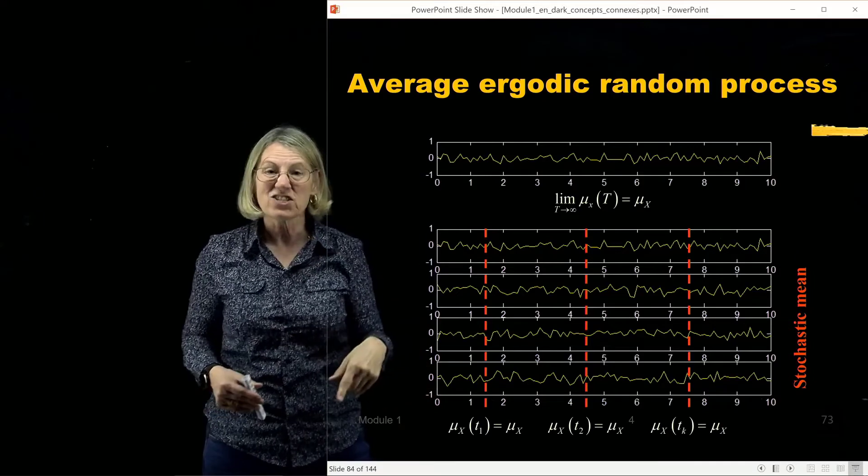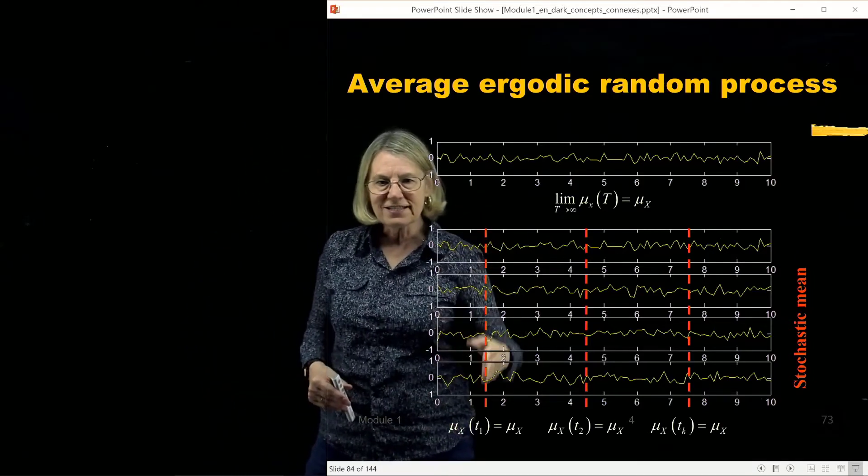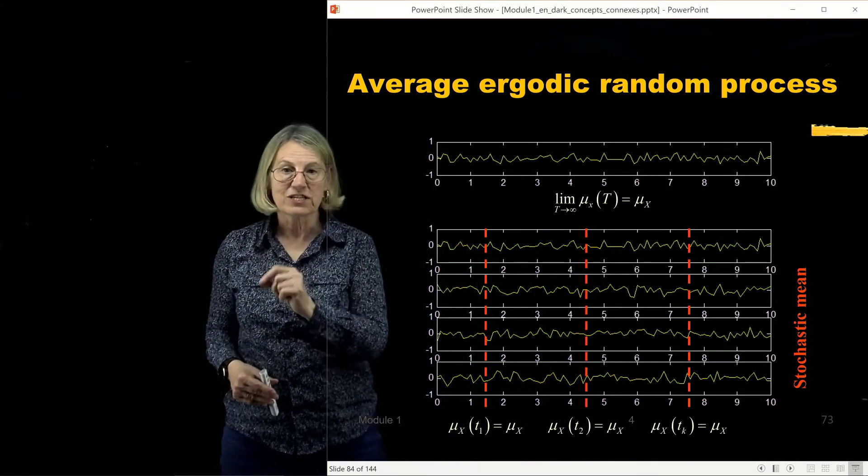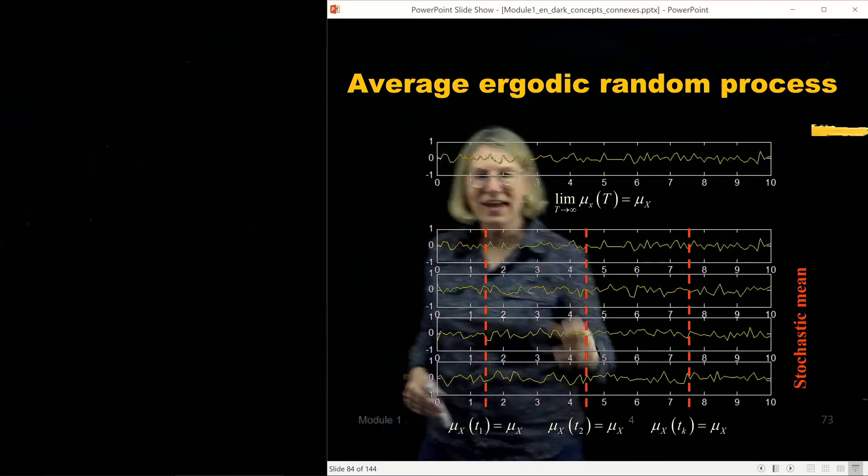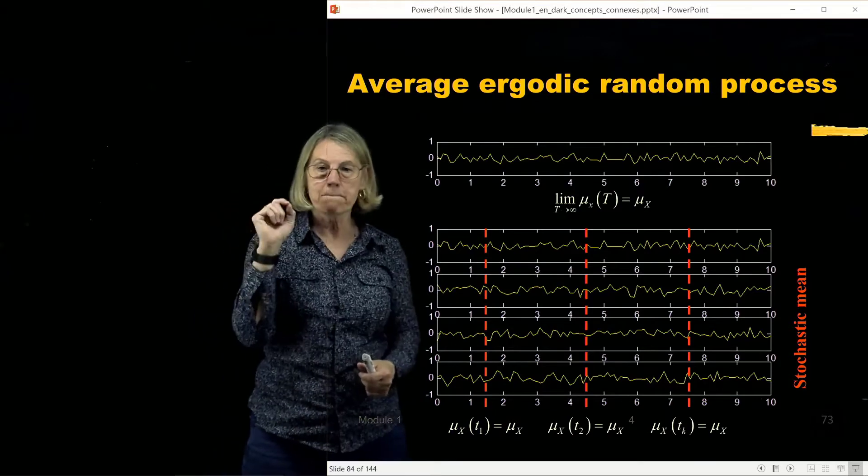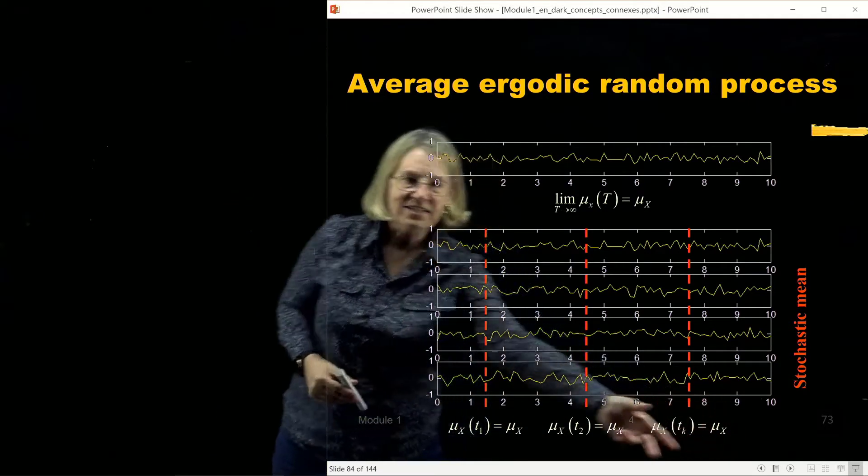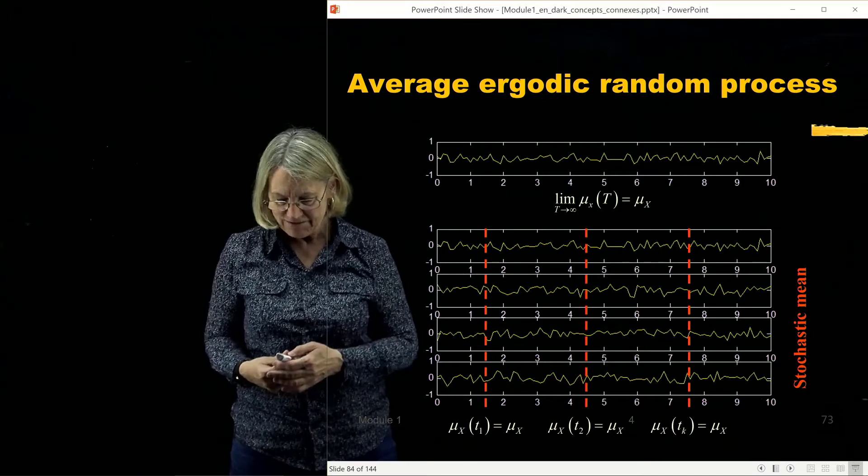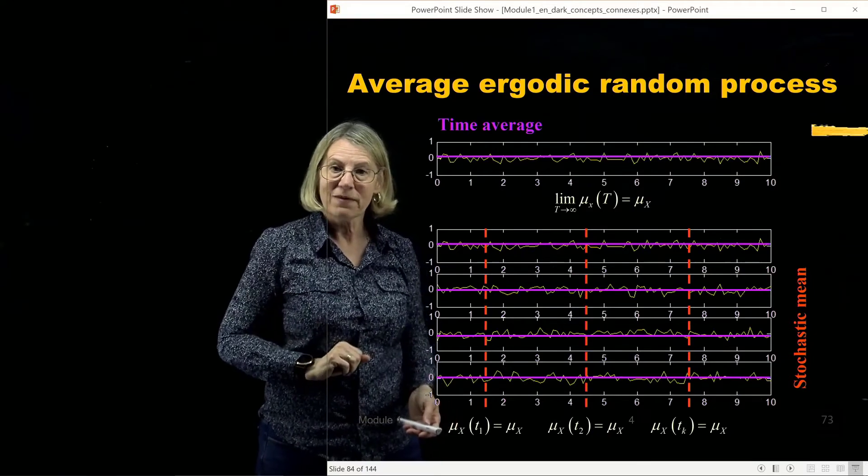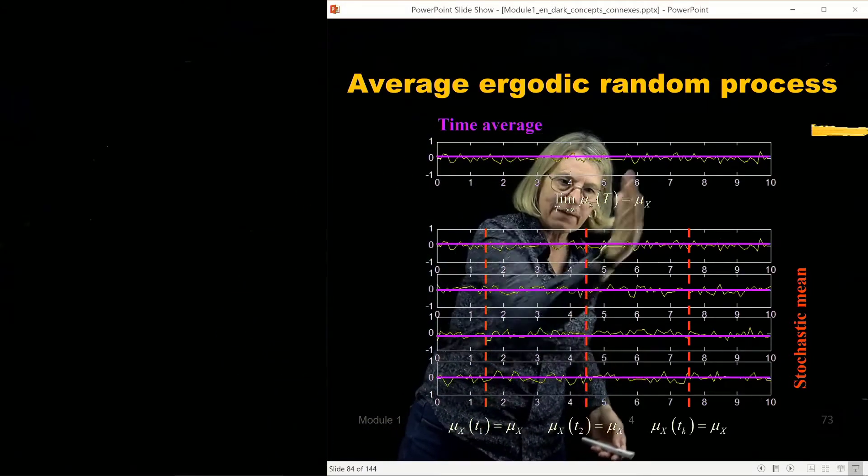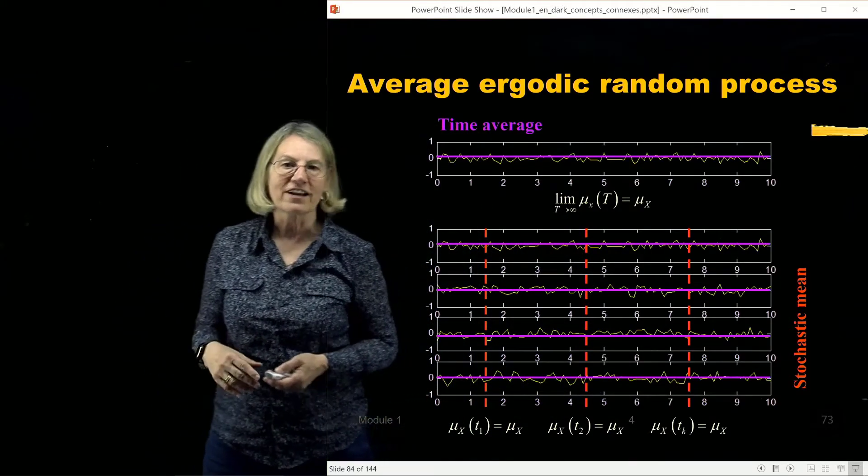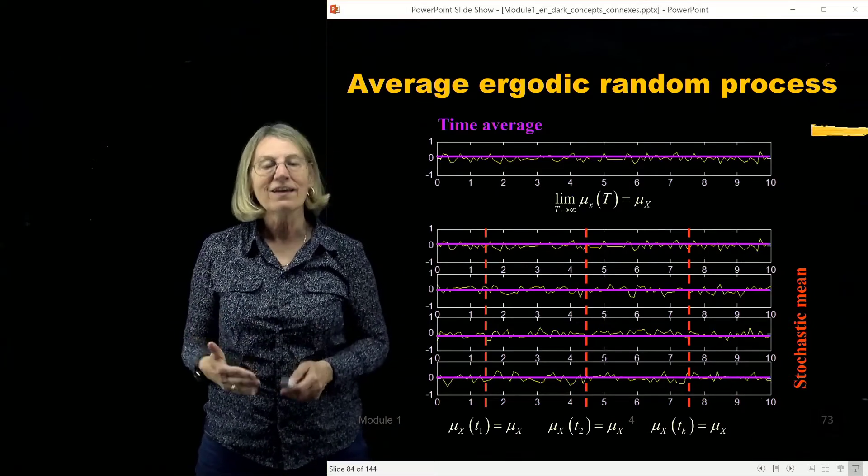Now imagine it's a stochastic process, not just a function of time. So I could have many different realizations. And at each instant of time, of course, there would be a certain average. Now if it's wide-sense stationary, that means no matter when I take the average, I'm always going to get the same number. So if that number that I get, that μx when I take the stochastic mean, if that is the same as the time average - so the time average is the same and this number, which is the time average, is the same as the stochastic average - that is a property of an ergodic process. It's ergodic in the mean.